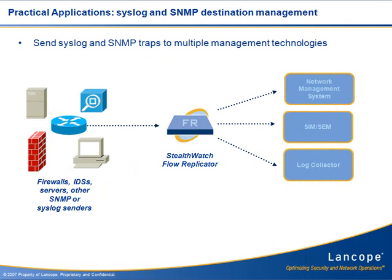Another common use for the Replicator is Syslog and SNMP trap replication. All network equipment can be configured to send their Syslog messages to the IP of the Replicator. Over time, as new Syslog and SNMP-based management systems are added or their IP addresses change, instead of making changes to all the network equipment, you make a single change to the rules within the UDP Replicator.